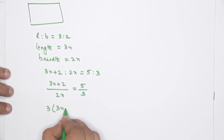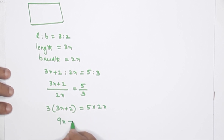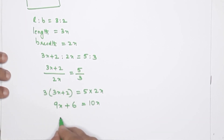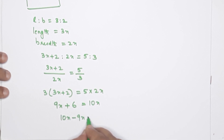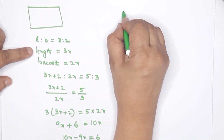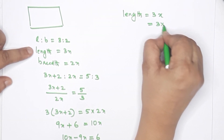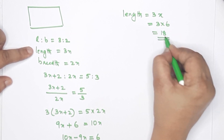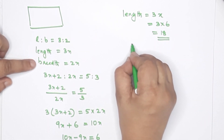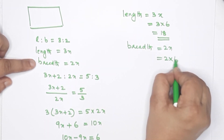3 into (3x plus 2) equals 5 into 2x, giving 9x plus 6 equals 10x. So 10x minus 9x equals 6, x equals 6. Length is 3x: 3 into 6 equals 18. Breadth is 2x: 2 into 6 equals 12.